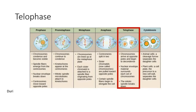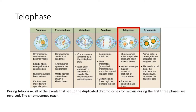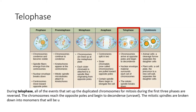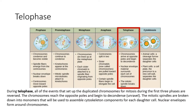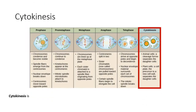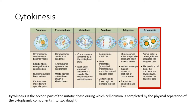During telophase, all of the events that set up the duplicated chromosomes for mitosis during the first three phases are reversed. The chromosomes reach the opposite poles and begin to decondense and unravel. The mitotic spindles are broken down into monomers that will be used to assemble cytoskeleton components for each daughter cell. Nuclear envelopes form around chromosomes. Cytokinesis is the second part of the mitotic phase, during which cell division is completed by the physical separation of the cytoplasmic components into two daughter cells. A cleavage furrow is formed in animal cells, whereas a cell plate forms in plant cells.